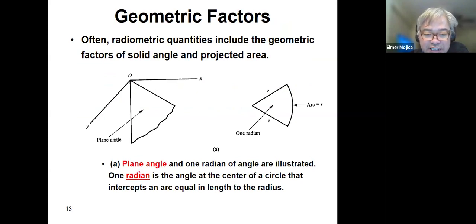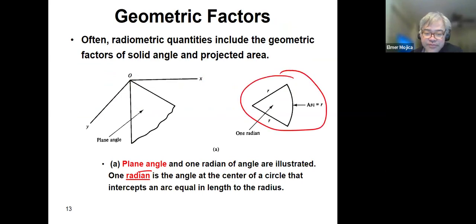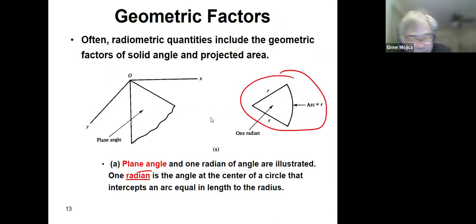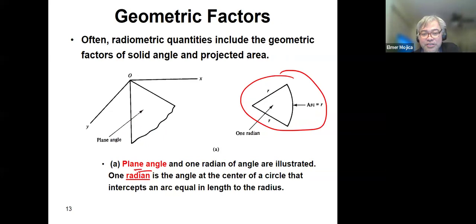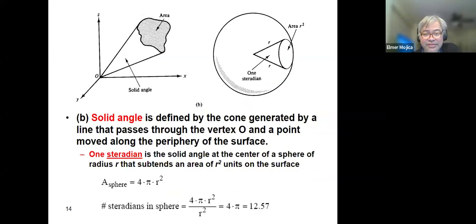For instance, if you have a plane angle — one radian is the angle at the center of a circle that intercepts an arc equal in length to the radius. That's the plane angle, in comparison to a solid angle. A plane angle is described by radians, while a solid angle is described by steradians.